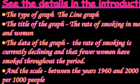Let us see the parts of that introduction. The type of graph is 'the line graph.' The graph starts with 'the line graph compares' — that is the title. 'The rate of smoking in men and women' is the data of the graph. 'The rate of smoking is currently declining and fewer women have smoked throughout the period' covers the overall trend. And the scale is 'between the years 1960 and 2000.' You can also add per thousand people in the scale. So these are the parts that should be included in the introduction.